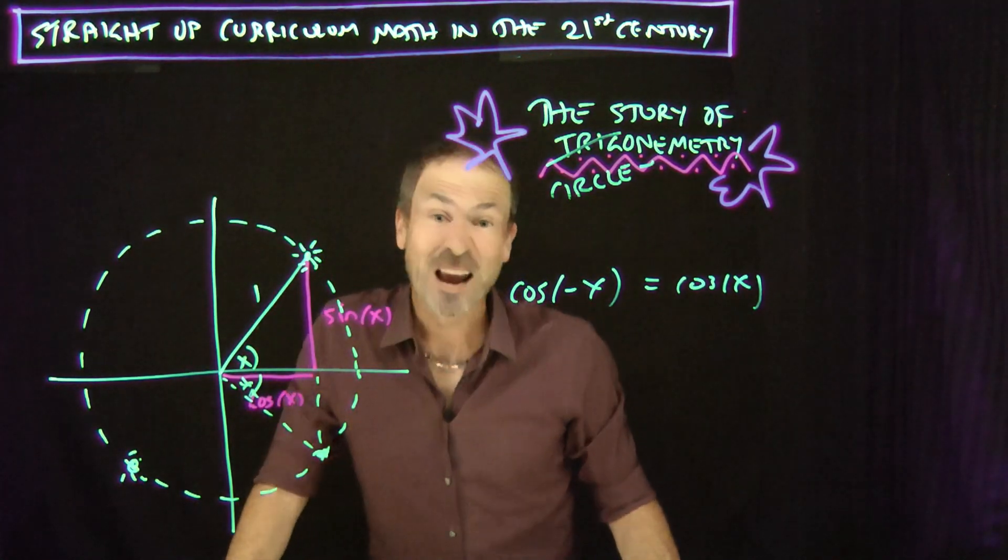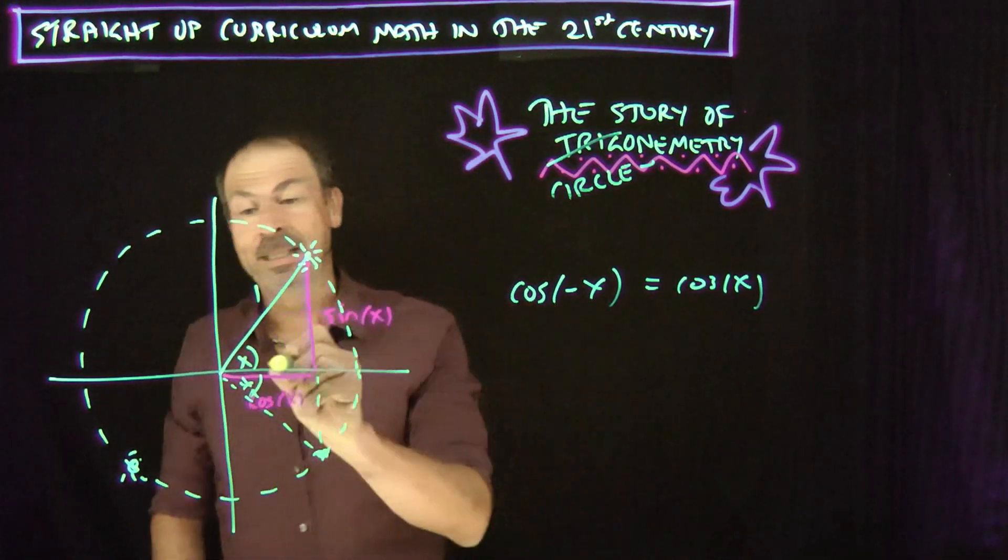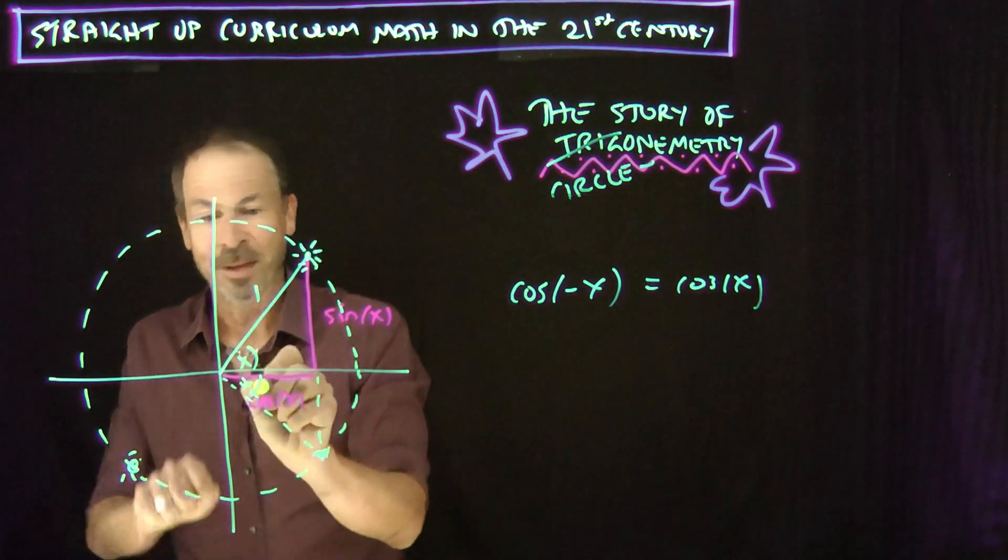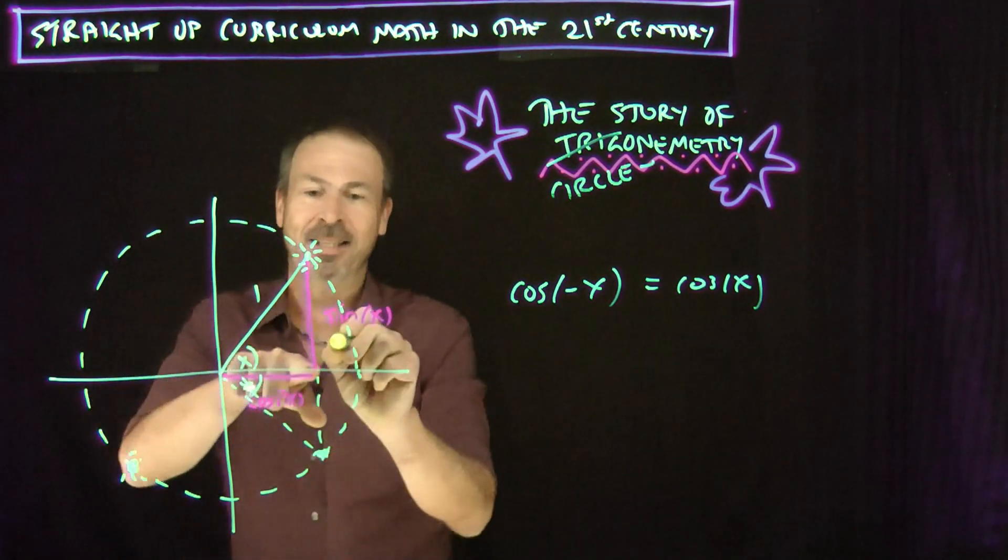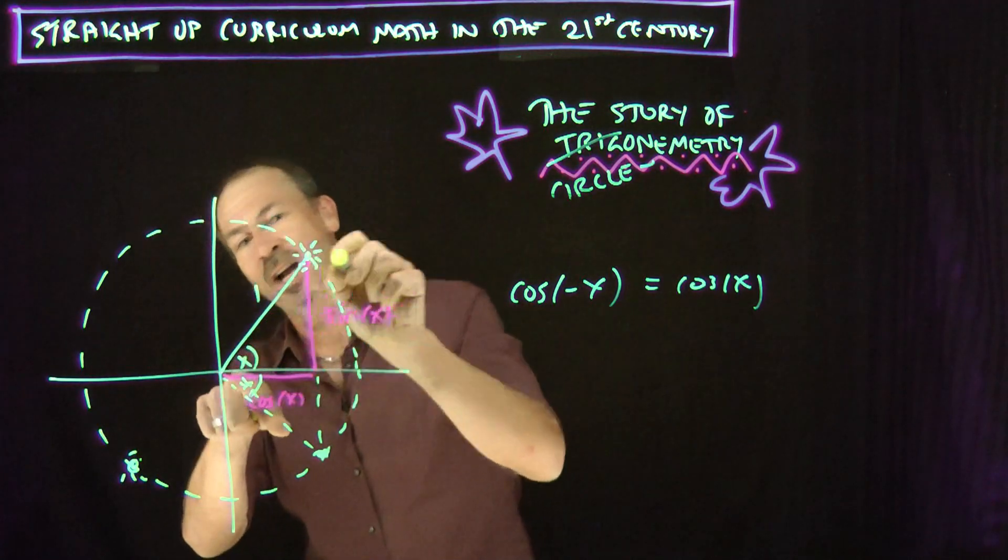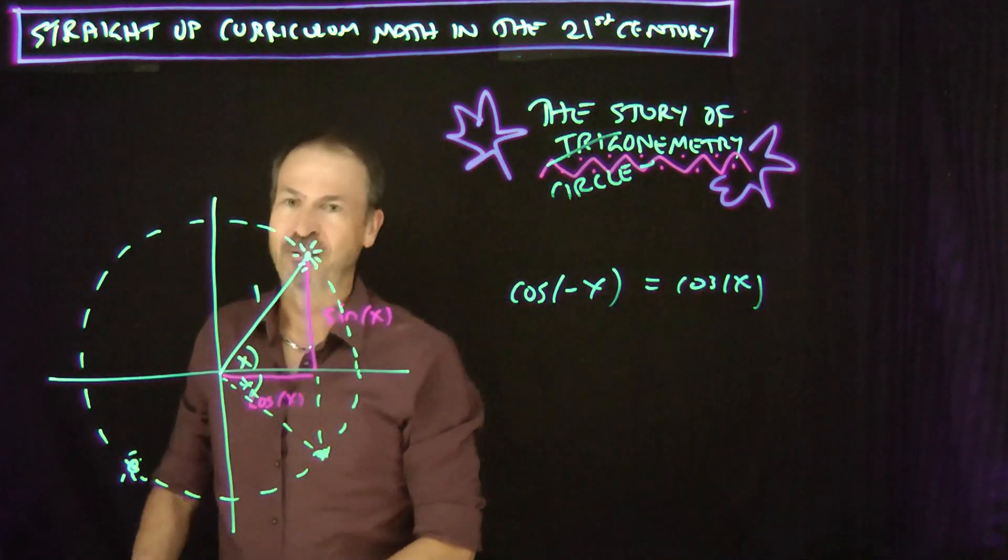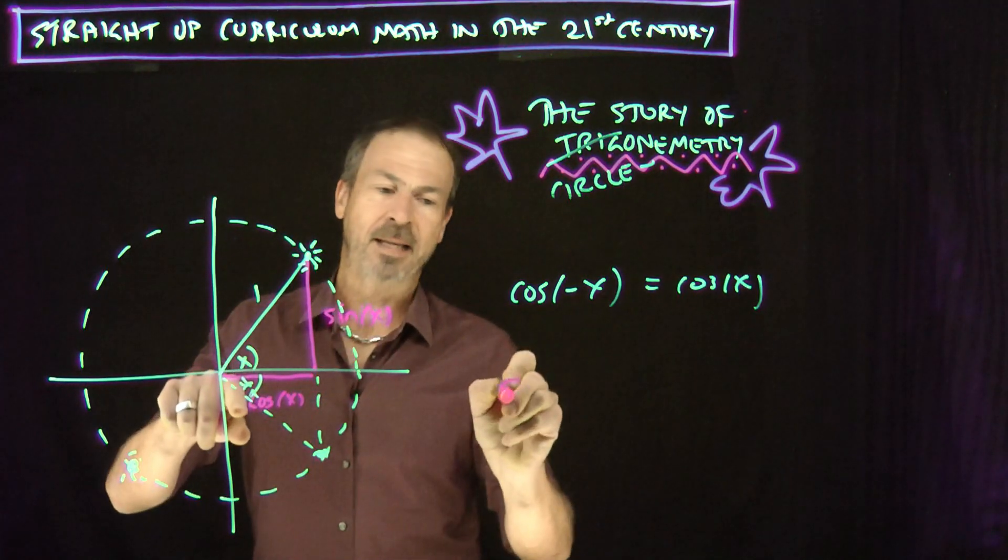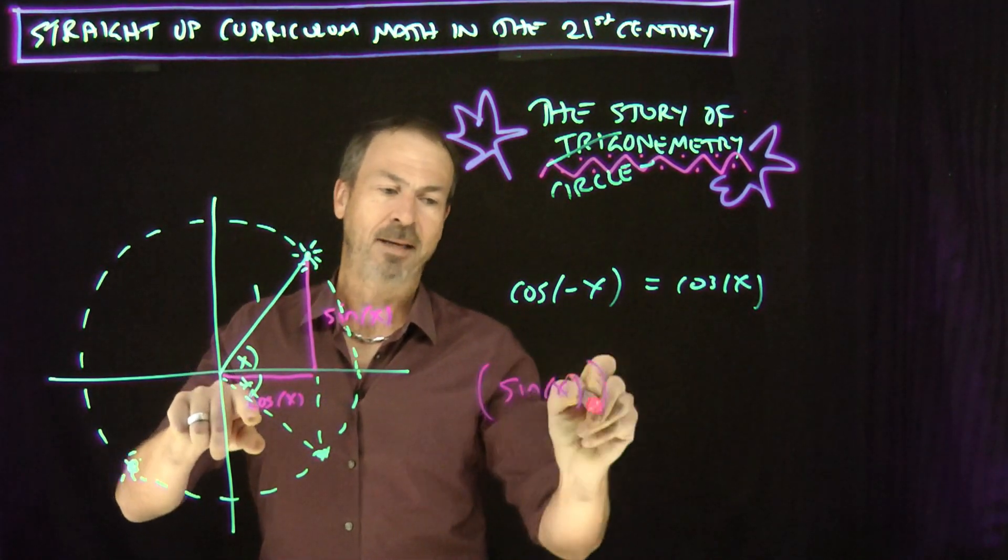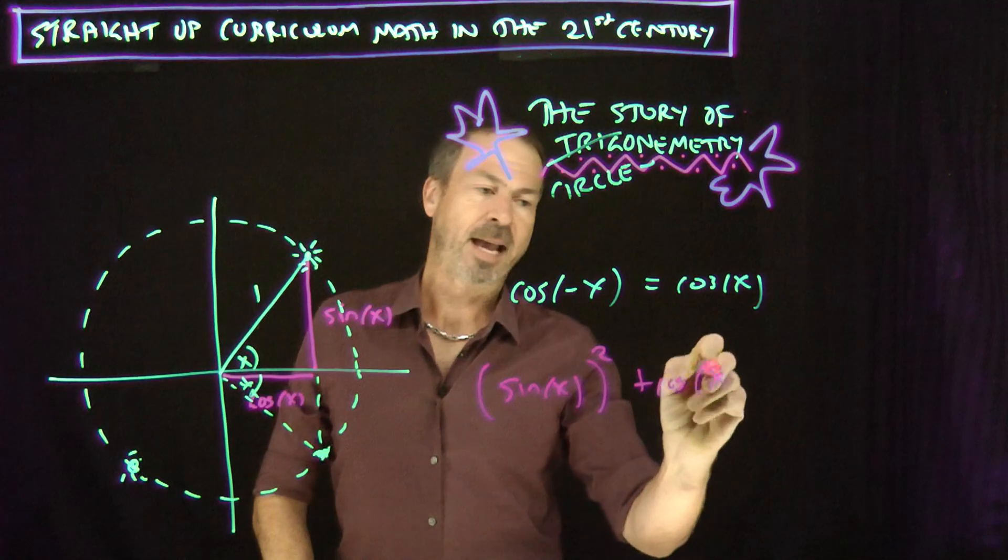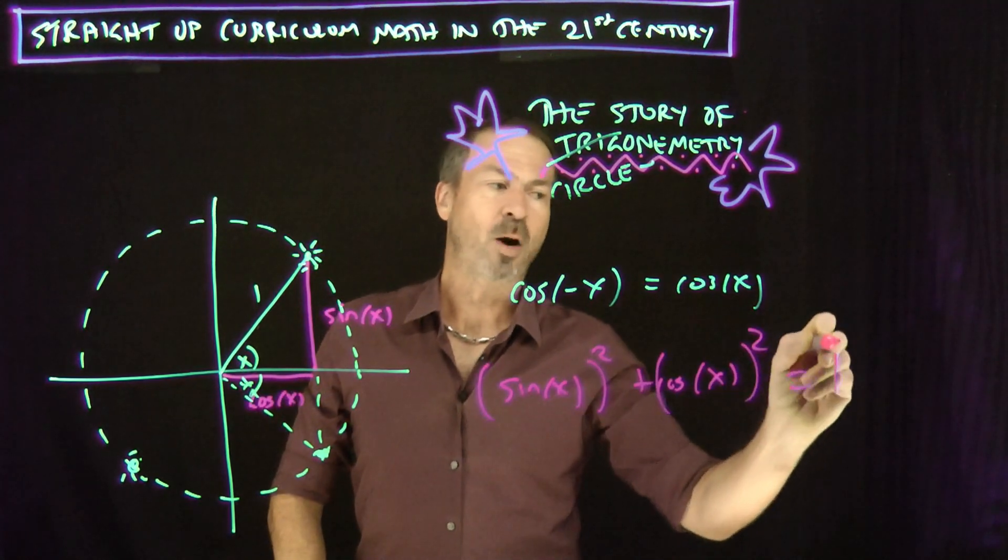The most famous identity of all is the one I'm seeing in this pink triangle right here. I see one side cosine of X, one side sine of X, one side of 1. Makes me think Pythagoras. So perhaps the most famous trig identity of all is that sine of X squared plus cosine of X squared equals 1 squared.